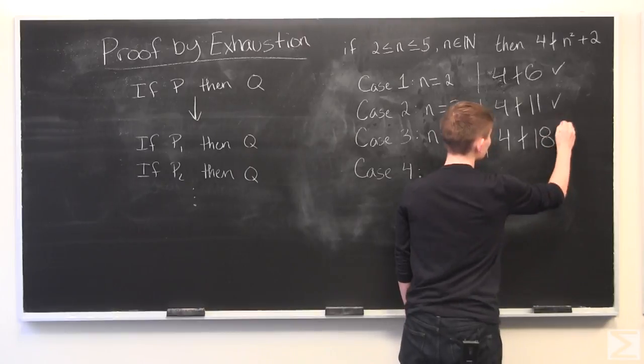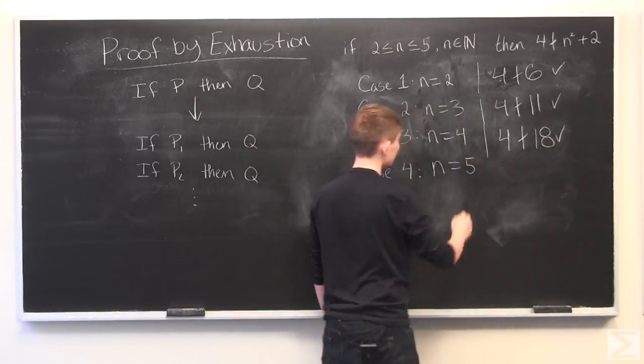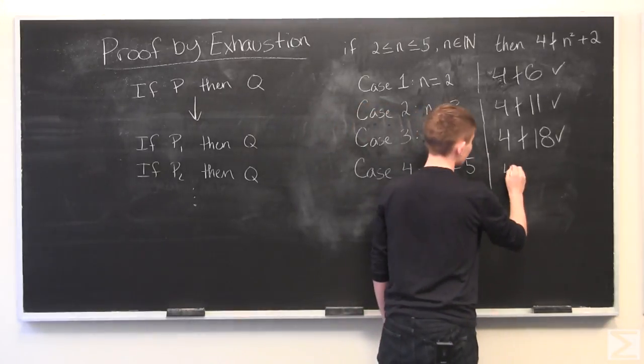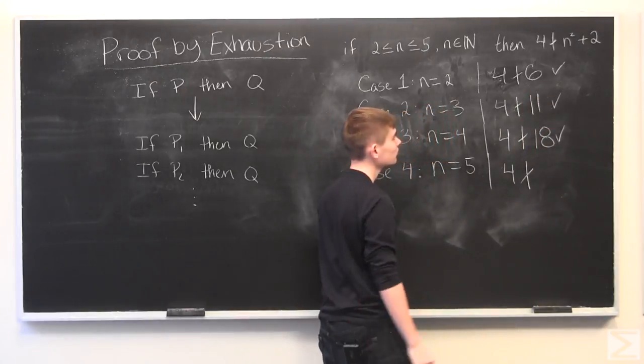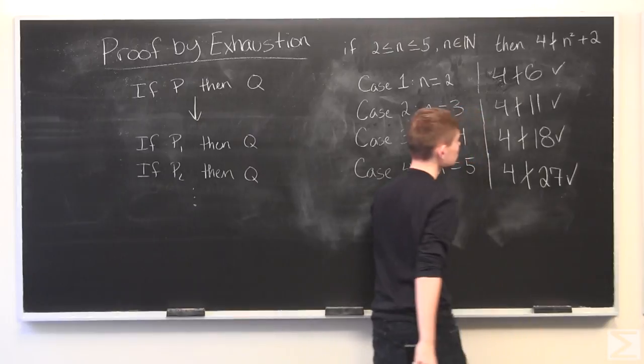And for N equal to 5, our last case, we will have that 4 does not divide 25 plus 2, which is 27. And that is true.